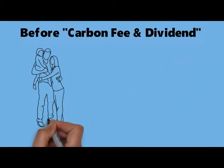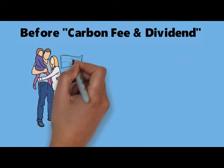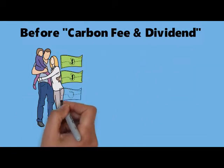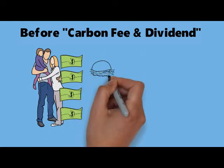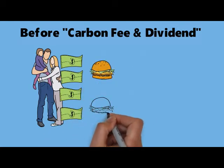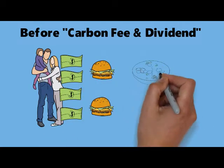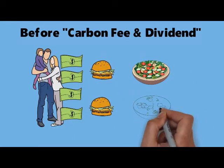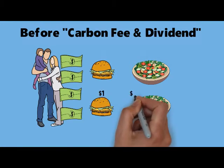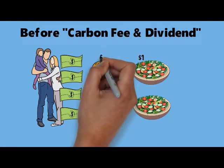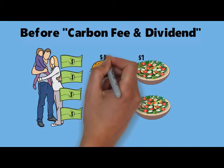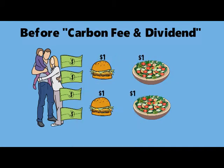Before carbon fee and dividend, here's what you see. There's a family going out for lunch or dinner. They have $4, so they're going to spend a dollar on each fast food item — they'll get two hamburgers and two salads.